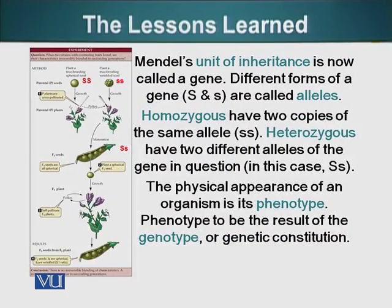Today we know that the unit of inheritance, or the genetic particle, is basically a gene — that's what we call them now. I would also like to point out that different forms of the same gene are referred to as alleles. So capital S and small s in the F1 plant are two alleles; they are different from each other in this case, though they could be similar or different.